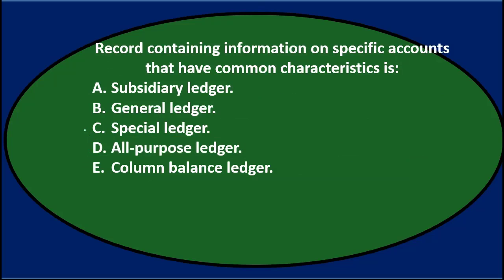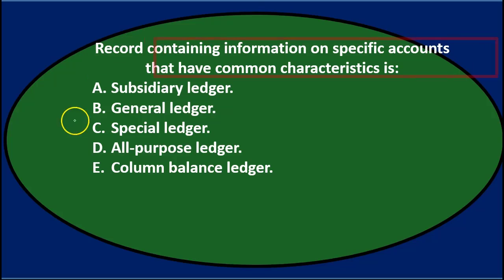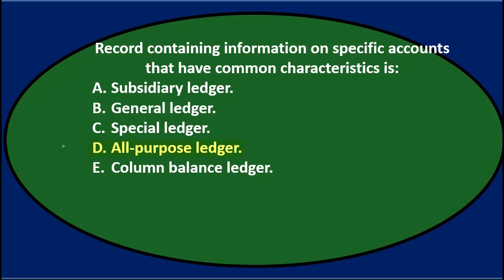Next question: record containing information on specific accounts that have common characteristics is — A. Subsidiary ledger. B. General ledger. C. Special ledger. D. All-purpose ledger. E. The column balance ledger.